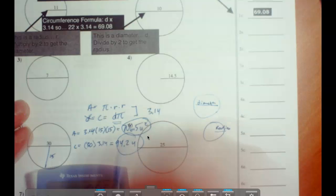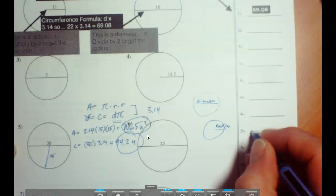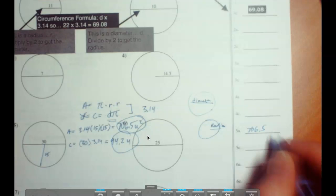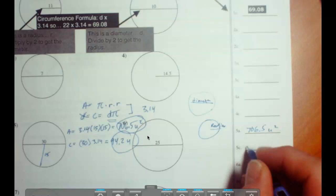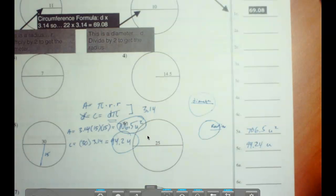So there they are. So number 5, we're just going over here for number 5. The area is 706.5, and that is units squared. And the circumference is 94.24, and that is just units.